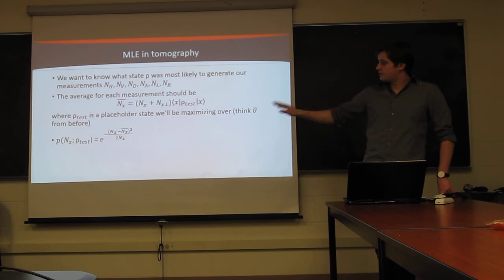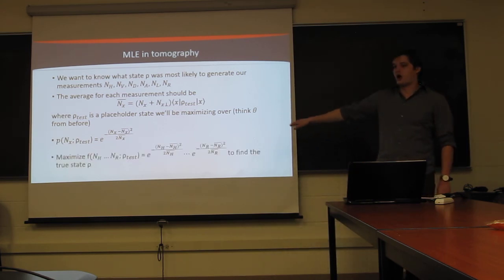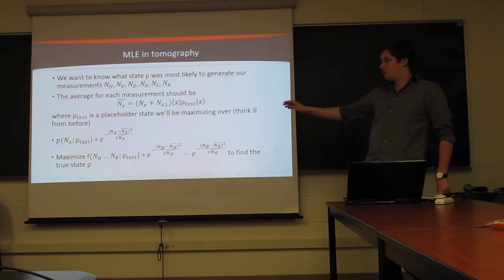But with each of these probabilities, the likelihood function is just a product of them all. And so we tune, basically we will be tuning our test state around to maximize this probability. To basically make it so that the counts that our test state would have given are as close to the counts we got in every single category as possible.